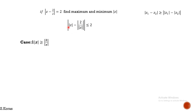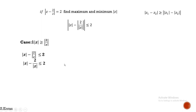In Case 1, this term is bigger and this is smaller, so the result is positive — we can write it as it is. Since modulus of Z1 over Z2 equals modulus of Z1 over modulus of Z2, taking modulus of the number 2 gives 2, and this becomes modulus of Z. Taking LCM gives modulus of Z squared minus 2 over modulus of Z, which is less than or equal to 2.